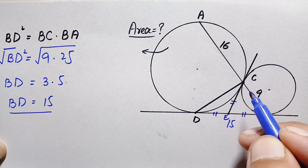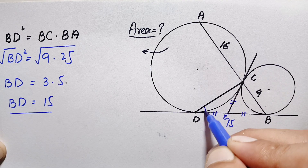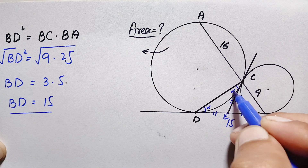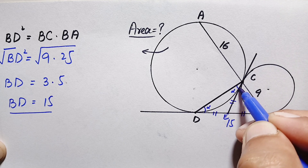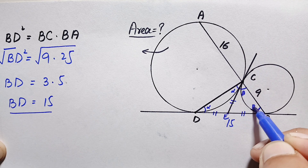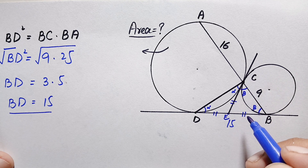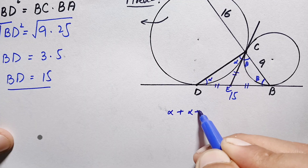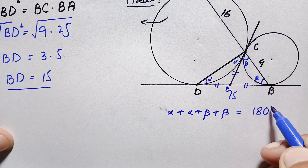Now consider triangle DEC: two sides are equal, so their opposite angles are also equal. Let this angle be alpha, so the other is also alpha. In triangle CEB, two sides are equal, so their opposite angles are also equal. Let this angle be beta, so the other is also beta. We know the sum of all angles in a triangle is always 180 degrees.